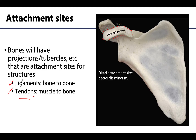One bony attachment site we are learning today is the coracoid process, which I have outlined here in red. This is on the anterior scapula, or your shoulder blade, and this will be the distal attachment site of the pectoralis minor muscle — the M here means muscle. So this is one of the reasons we have you learn these bony landmarks, so you can match the distal attachment site with the proximal attachment site and understand a lot of important things about the muscle.